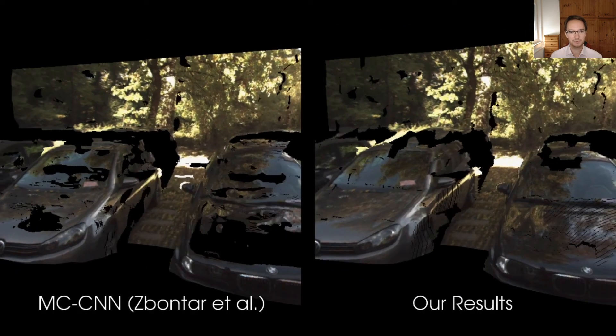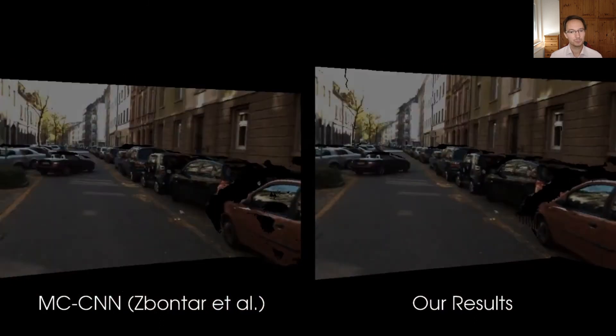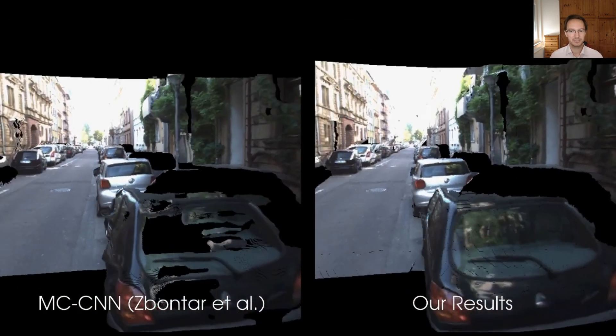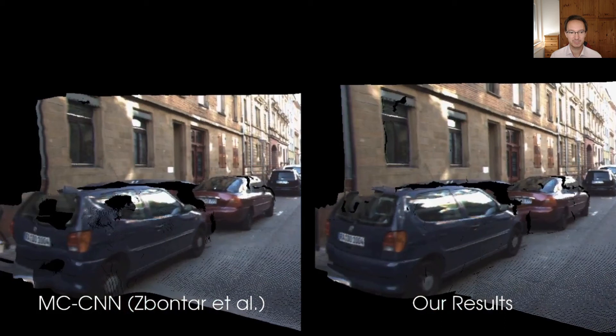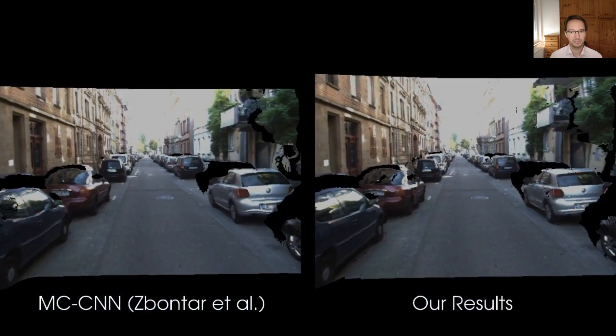And so here's some results. On the left, you can see the result of the baseline method, the Siamese stereo matching network from Zbontar et al. And on the right, you can see the result when regularizing at the object level. And all of these results that you can see here, these point clouds, these color point clouds are inferred from just two images.